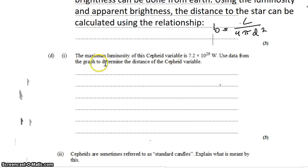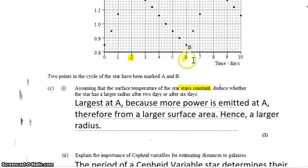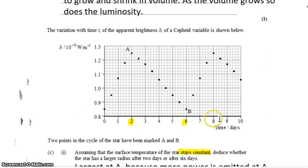Okay, we've got to do a calculation here. The maximum luminosity of this Cepheid variable star is 7.2 times 10 to the 29 watts. Presumably we calculated that knowing that the period was, whatever this is, six days.